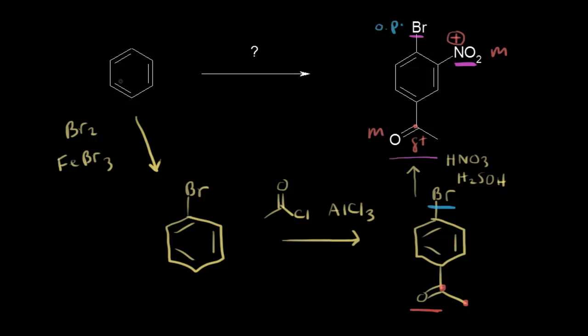For this synthesis, we start with a bromination reaction to form bromobenzene. The bromine is an ortho-para-director, so it puts the acyl group on the ring in the para position as the major product. Then we nitrate it — with an ortho-para-director and a meta-director, the nitro group ends up in the correct position, and we're done. That's how to think about synthesis problems using retrosynthesis — working backwards from target molecules. We'll do two more in the next video, which are a little bit harder.